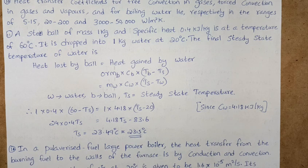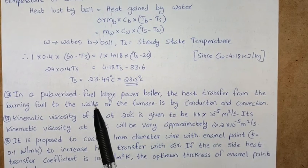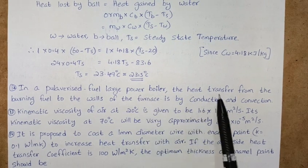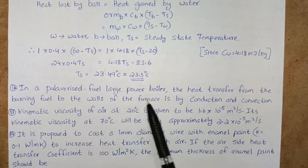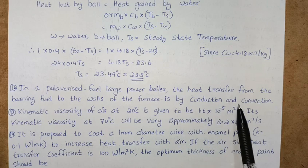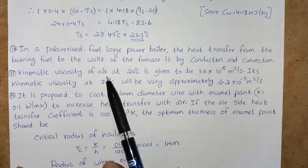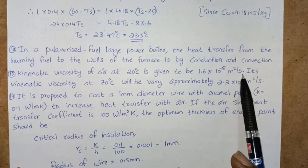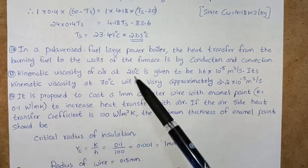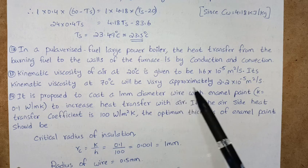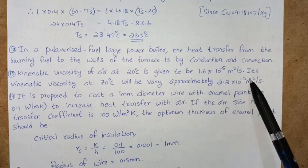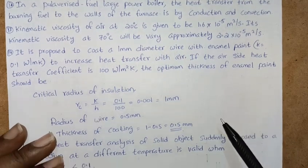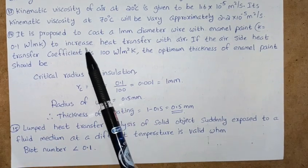In a pulverized fuel fired power boiler, the heat transfer from the burning fuel to the walls of the furnace is by radiation and convection. Kinematic viscosity of air at 20 degree centigrade is 1.6 times 10 to the power minus 5 meter square per second. Its kinematic viscosity at 70 degree centigrade will be very approximately 2.2 times 10 to the power minus 5 meter square per second.